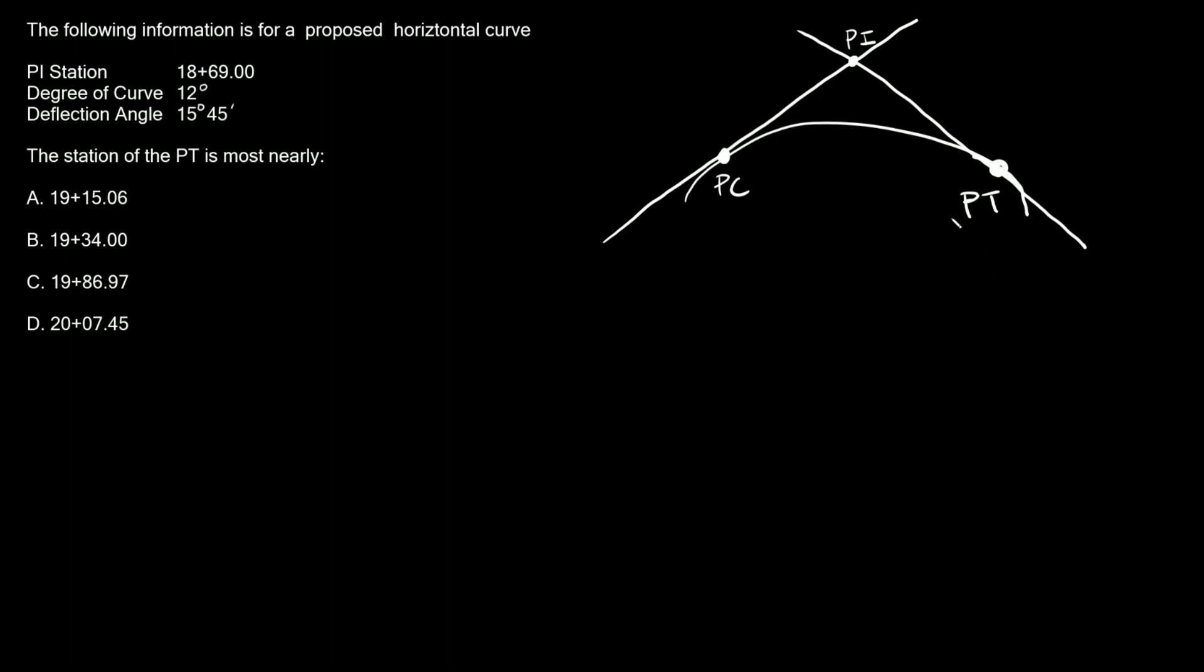One equation you can use for the PT would be that the PT is equal to the PC plus L. So the beginning point, this station here plus L, and L is just the length from your PC to your PT. So how do you find the PC and the L?